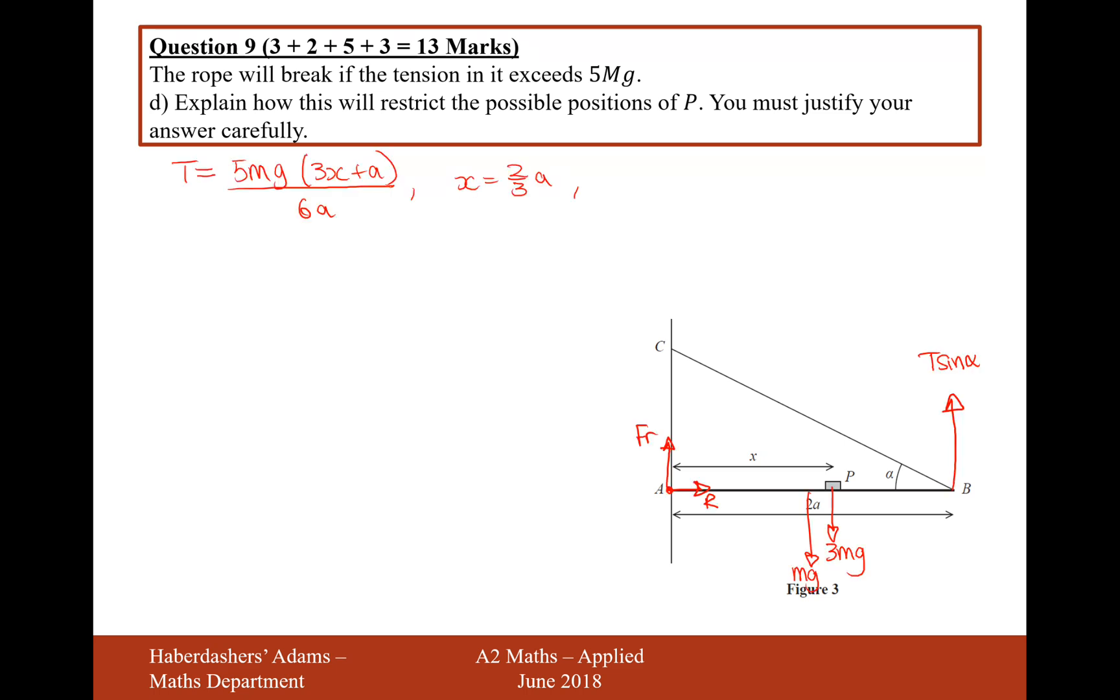And moving on to part D. The rope will break if the tension in it exceeds 5 mg. Explain how this will restrict the possible position of P. You must justify your answer. Okay, so what we'll probably assume here is that P can change position away from the current position it's in. So, what we want here is for the tension to be less than or equal to 5 mg. So, if we now put the tension in there, 5 mg brackets 3x plus L over 6L, has to be less than or equal to 5 mg. Let's now rearrange this. Let's move 6L up to the other side. We could actually cancel out the mg's now. Why not? So, it's going to be 15x plus 5L is less than or equal to, when we times it to the other side, that's going to be 30L.